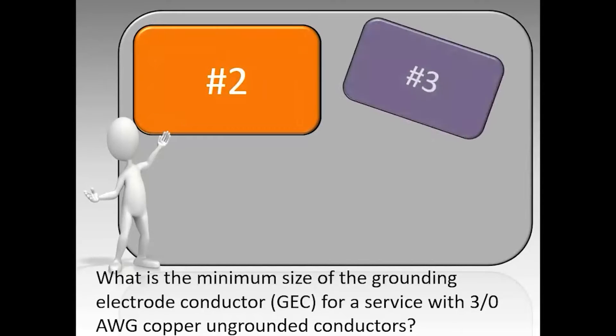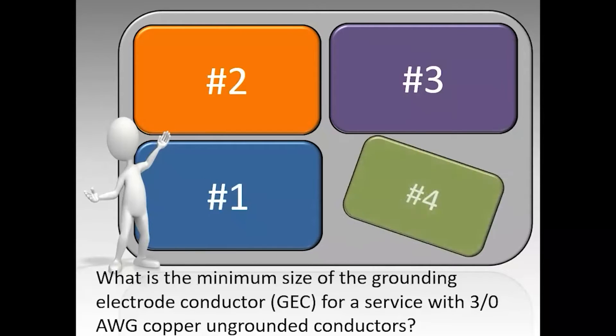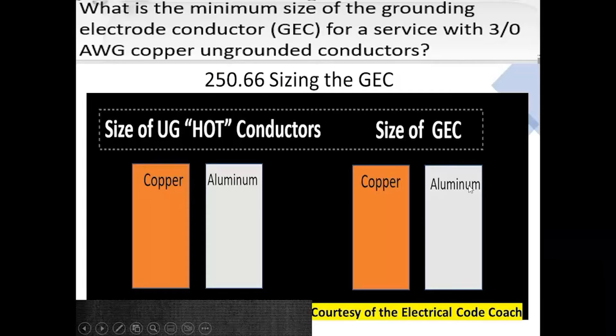What is the minimum size grounding electrode conductor for a service with 3-0 copper ungrounded conductors? The correct answer is number four.